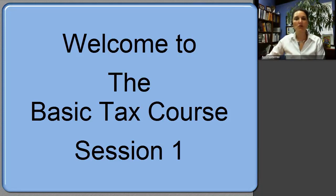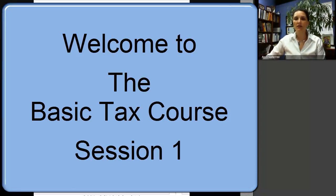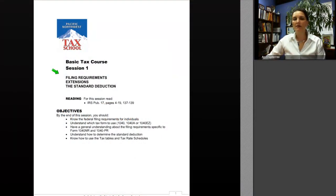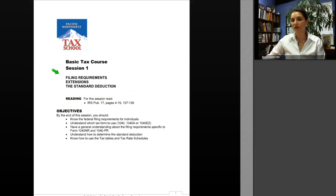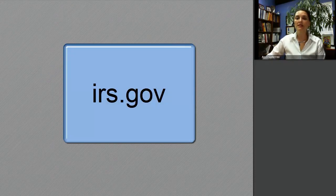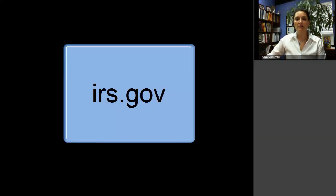Hello, and welcome to Session 1 of the Basic Tax Course. Before we get going with today's session, I wanted to point out the reading assignment you need to complete, which comes from IRS Publication 17. Publication 17 is almost 300 pages long, and we have it loaded in the LMS so you can read it on your computer screen or print it. I want to show you how to go about ordering Pub 17, because the IRS will send it to you for free. I'm going to navigate to the IRS website, IRS.gov.